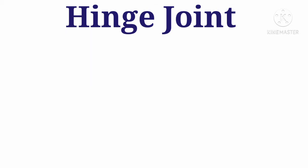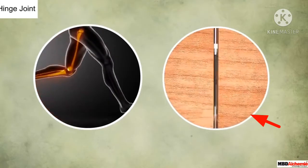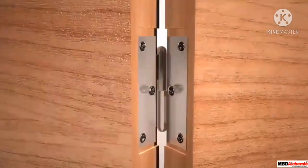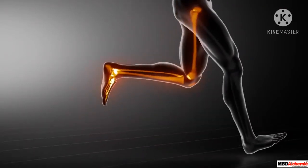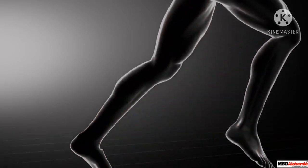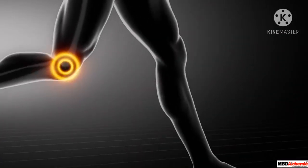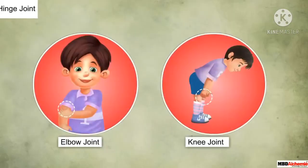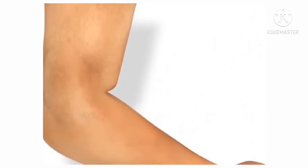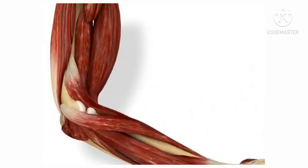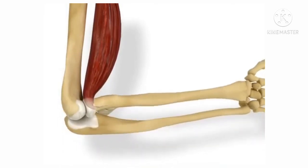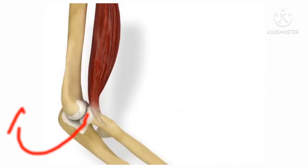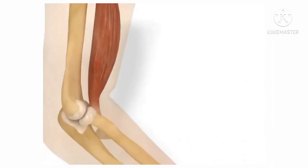The next joint is hinge joint. Children, this is a hinge — it is used to fix the door to the frame. This hinge allows the movement of the door in only one direction. In the same way, hinge joint also allows movement in only one direction. Hinge joint is seen in our elbow and in our knee. Due to the hinge joint present in our elbow, we can move our elbow only in one direction, that is, in the upward direction. Can we move our hand in the other direction? No, because hinge joint allows movement only in one direction.